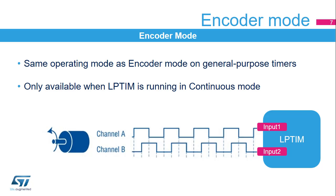The low-power timer features an encoder mode function that can interface with incremental quadrature encoder sensors using the peripheral's INPUT1 and INPUT2 inputs. Both inputs feature glitch filtering circuitry. The encoder function is similar to the one embedded in the general-purpose timers. In order to use the encoder mode function, the low-power timer must be running in continuous mode. Notably, only low-power timers 1 and 2 embed the encoder mode function.